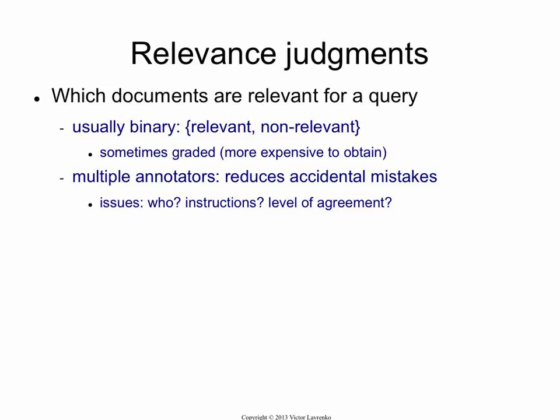But there are actually a lot of problems with graded judgments. They are more expensive to obtain. The agreement between users is lower with graded judgments — it's higher if you just force them to decide relevant or non-relevant. The cognitive load is higher, so users are slower at producing graded judgments; you can get more binary judgments in a unit of time. And with graded judgments, it's also harder to build metrics. Most of the metrics we'll be talking about use binary judgments — relevant or non-relevant.